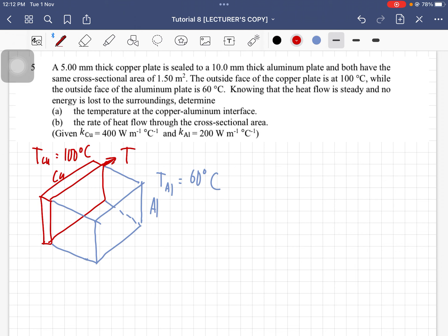We are asked to extract the information on temperature and the cross-sectional area. So the cross-sectional area is the same, which is 1.5 meter square, the same for copper, the same for aluminum.